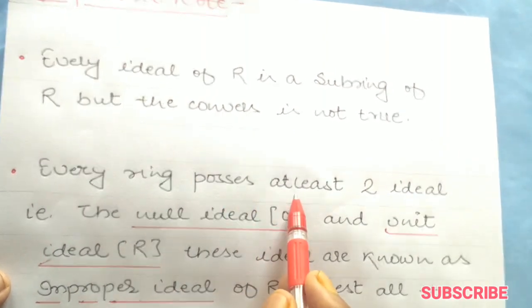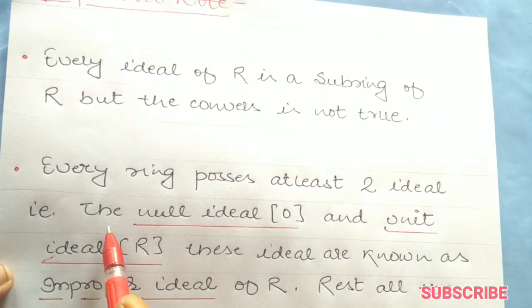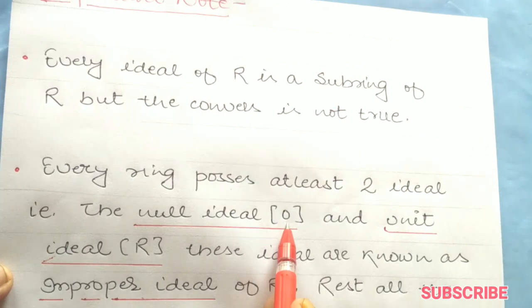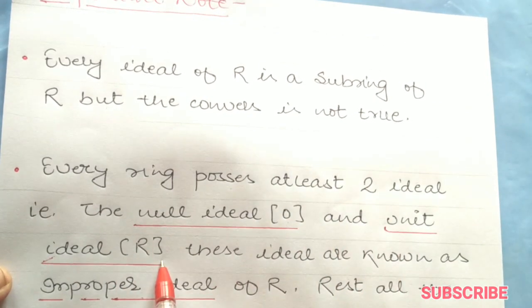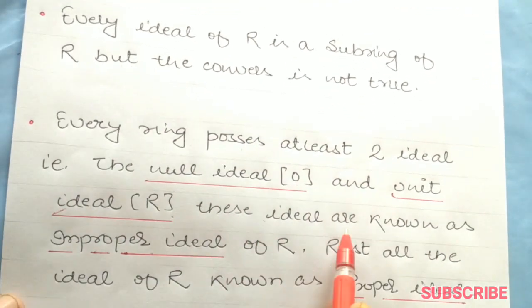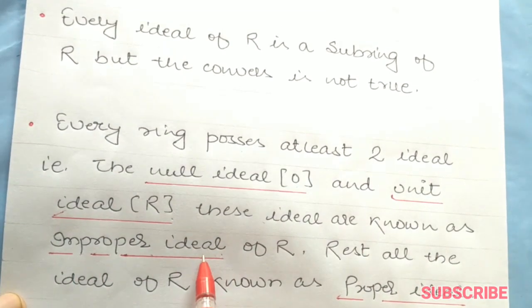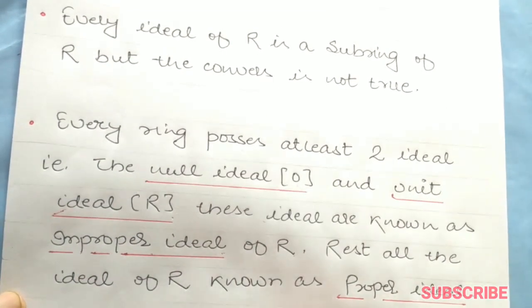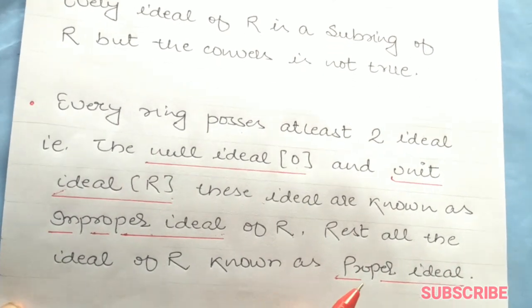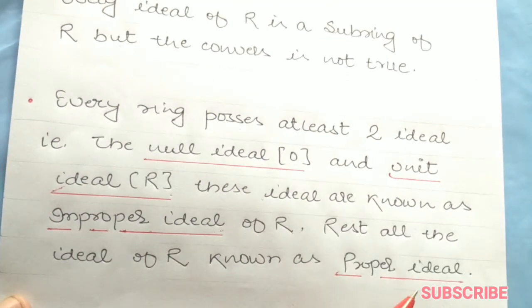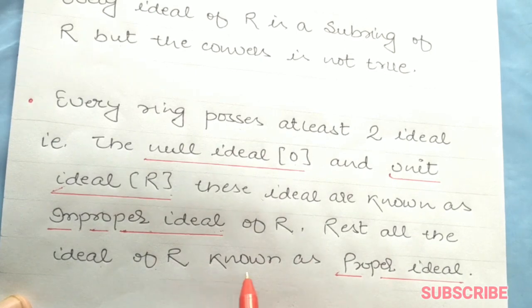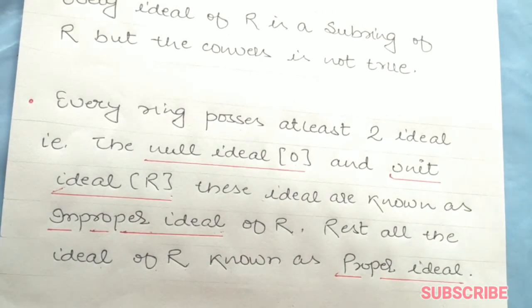Second note, which is very important: every ring possesses at least two ideals, that is, the null ideal {0} and the unit ideal R. These ideals are known as improper ideals, and the rest of the other ideals are known as proper ideals.